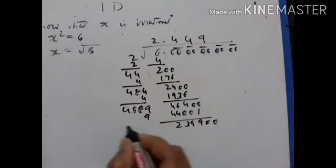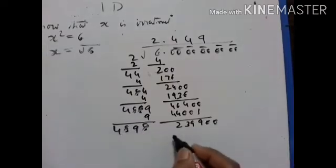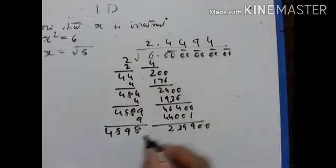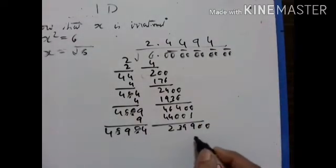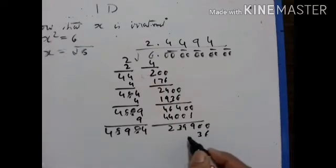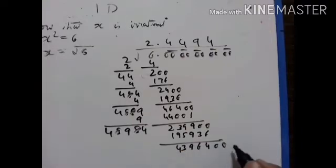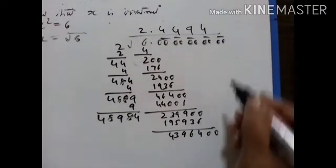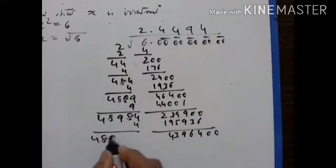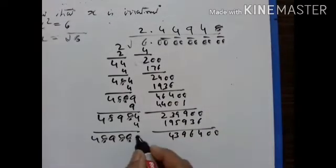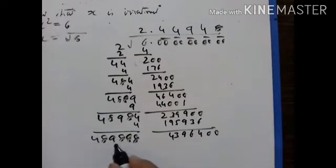Again 2 zeros, add this 9. What can we take now? If we take 5 it will be more, so let's take 4 again. 4 into 4984 is equal to... subtracting we get the remainder. Again 2 zeros. We can't take 9 — it will be more — so let's take 8 again. 8 into 48988.